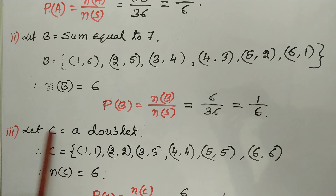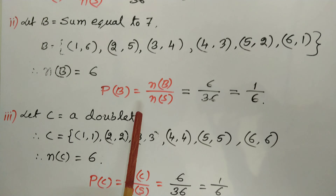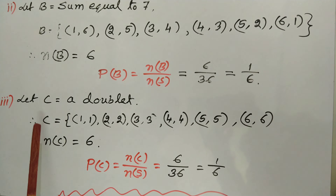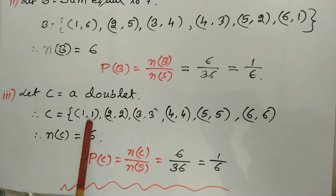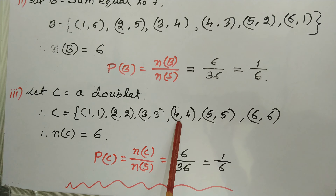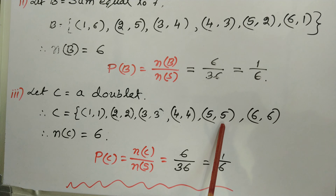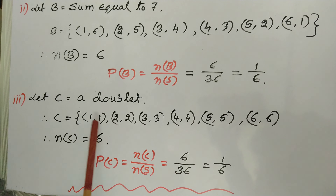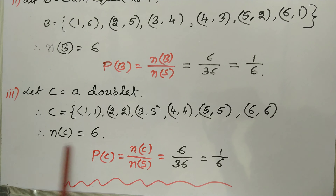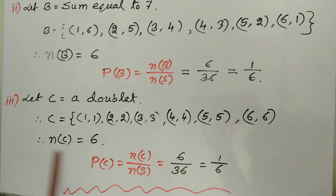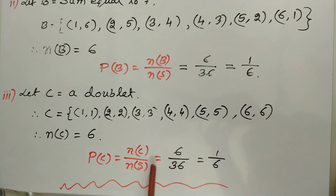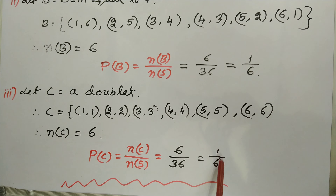Third: let C be the event — a doublet. Doublet means both faces showing the same numbers. Therefore C = {(1,1), (2,2), (3,3), (4,4), (5,5), (6,6)}. Therefore n(C) = 6. Desired or favorable events = 6. Probability of C = n(C)/n(S) = 6 by 36 = 1 by 6.